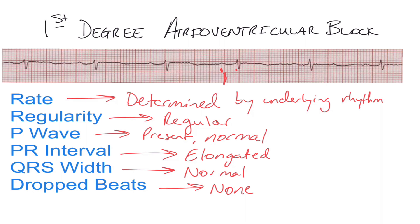That's one big box or longer on your ECG paper. So if you have an elongated PR interval and everything else looks pretty normal, you might be dealing with a first-degree AV block.